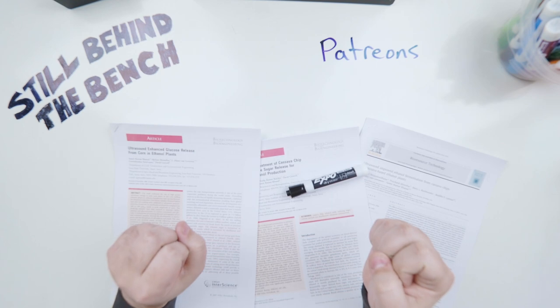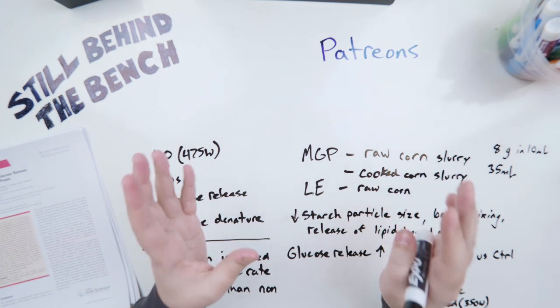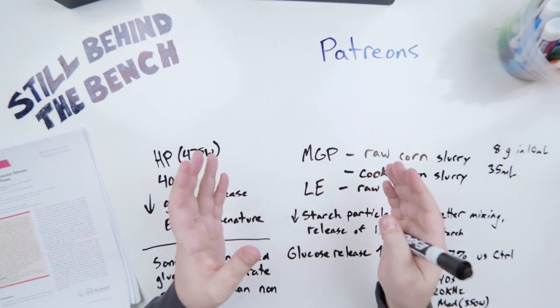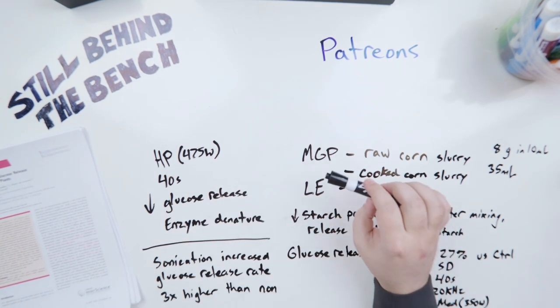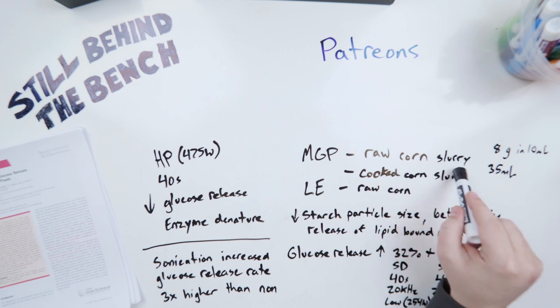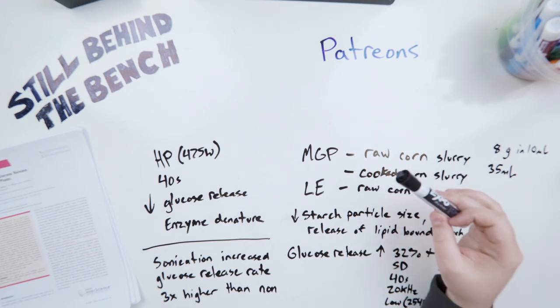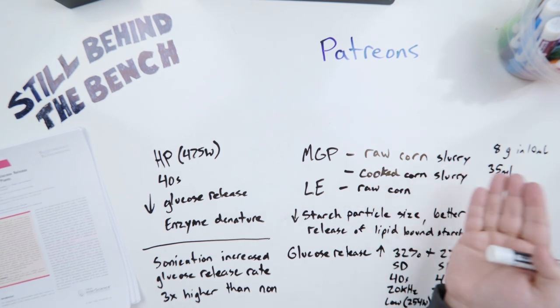Let's take a look at this first study. In the first study they only tested mashing and this was under non-optimized conditions. They had looked through the literature, nobody had ever done something similar so they were just sort of winging it trying to figure out what to do. To summarize the experiments in this first study they had two sources for corn. One was MGP who's known for making whiskey that other people put their labels on. The other source was called Lincoln Way Energy. In the case of MGP they had a raw corn slurry so it was milled raw corn and in the other sample they provided it was a milled cooked corn. Lincoln Way Energy provided raw corn and the people doing the study made their own slurry.